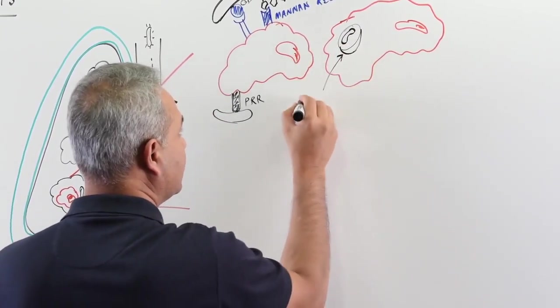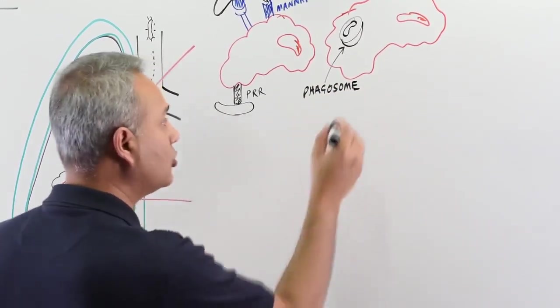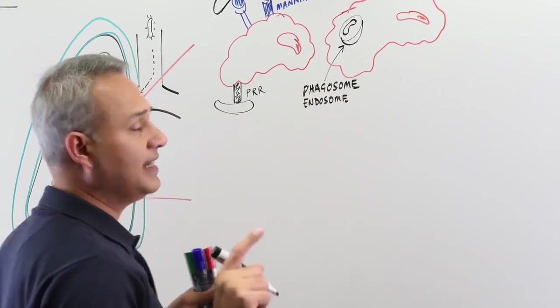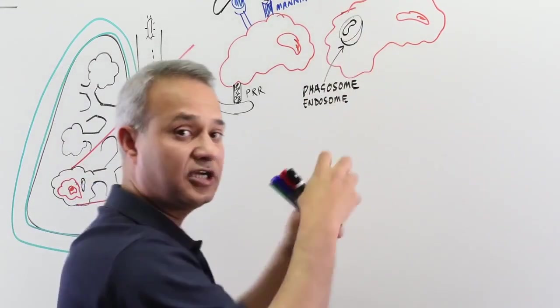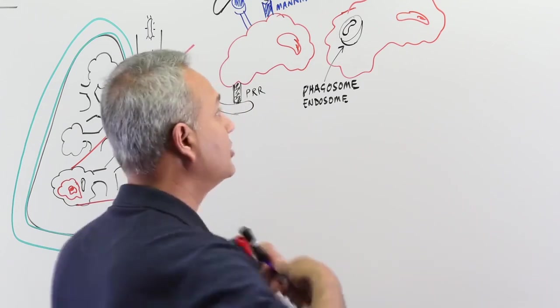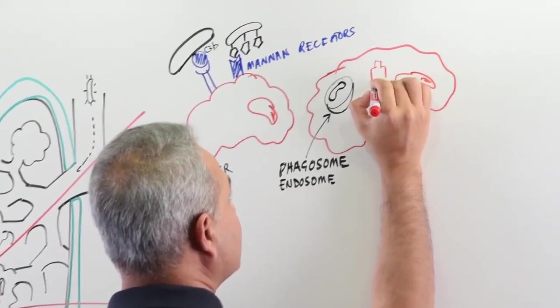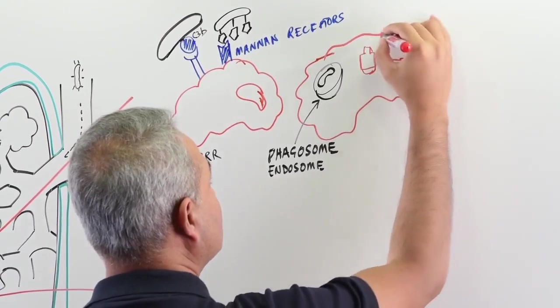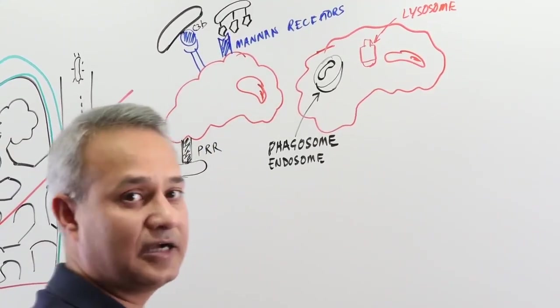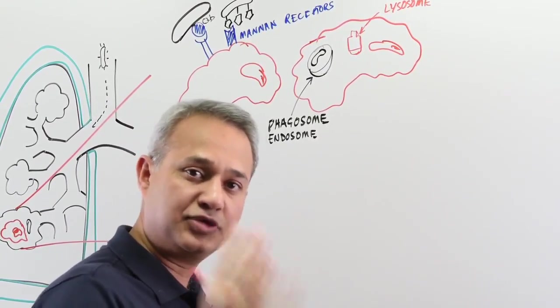This is the phagosome. This is also endosome. Endosome or phagosome, same thing. What is the next step? The next step is that the macrophage will activate its internal machinery, microtubular systems, and bring a lysosome and connect it to the phagosome. Let's say over here a bottle of acids is sitting here. What is this bottle? This is the lysosome. What does it have? It has acid hydrolases, proteinases, DNases, and so many other things that can chop up, that can break up a pathogen.